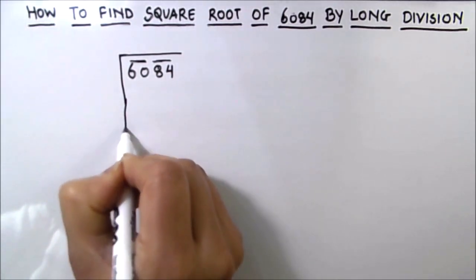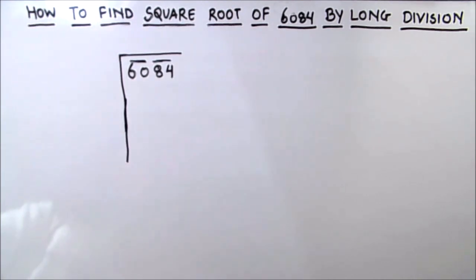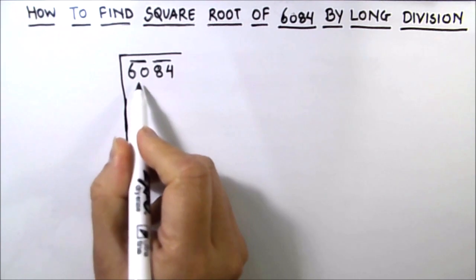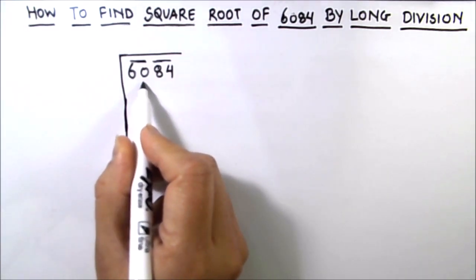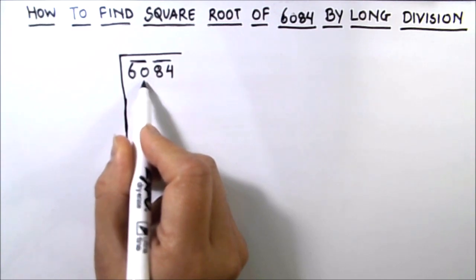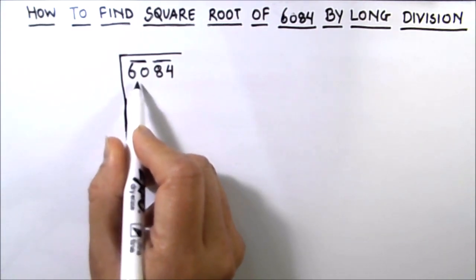Next step is to divide the number. We are going to write it under the division sign like this. So the next step is to find such a square number whose square is equal to 60 or is just less than 60.